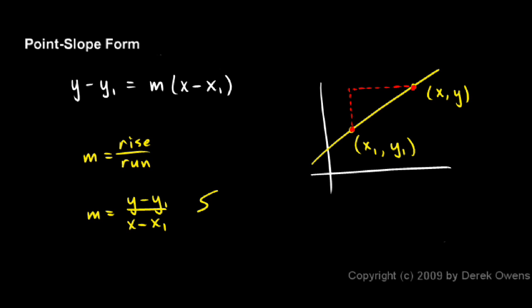We can rearrange this equation. If I multiply both sides by x minus x1, then on the right, the x minus x1 terms cancel. I'm left with y minus y1 equals m times x minus x1, this equation right here.